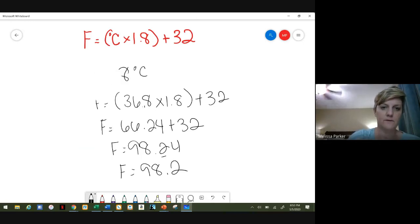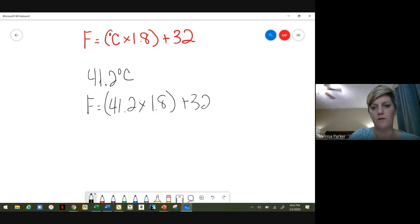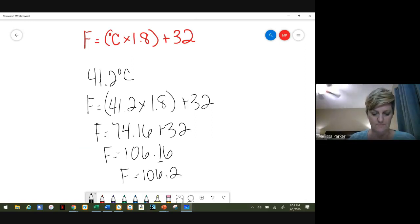All right, so the next one, number four. We're going to have 41.2 degrees Celsius. Go ahead and plug that in: 41.2 times 1.8 plus 32. So take our 41.2 times 1.8, and we get 74.16 plus 32. If you add that, then you get 106.16. If we round to the nearest tenth, then we'd have 106.2 degrees Fahrenheit.